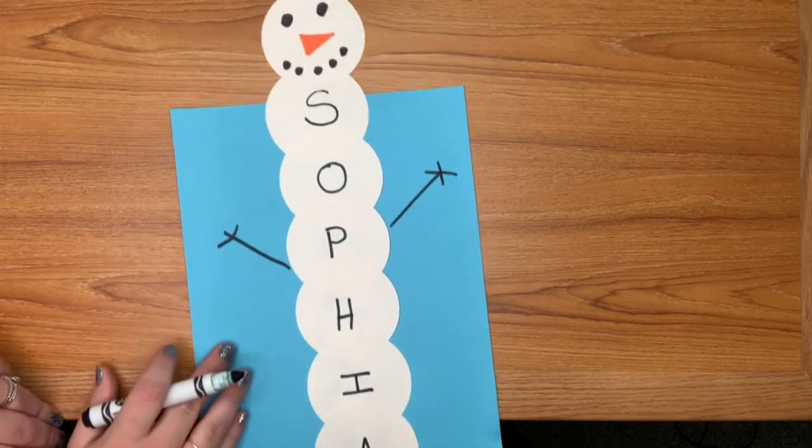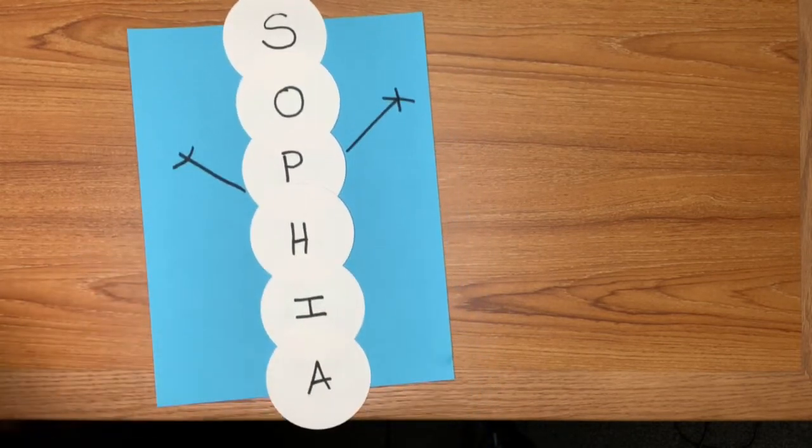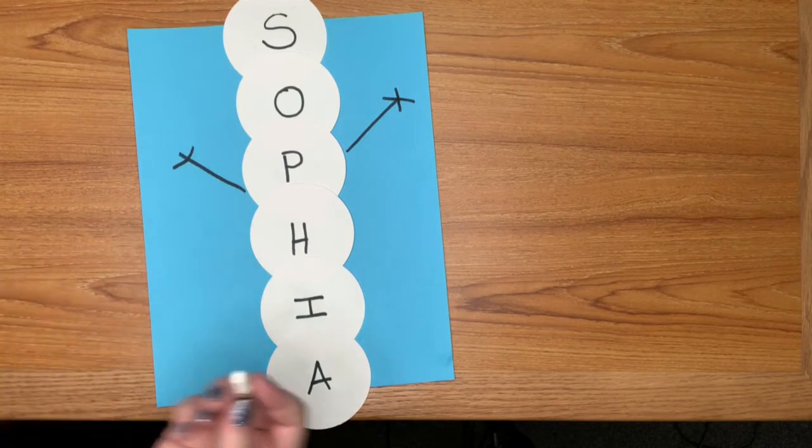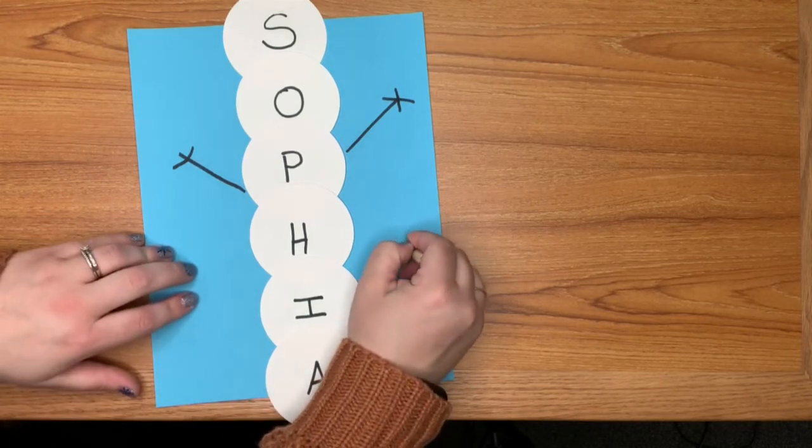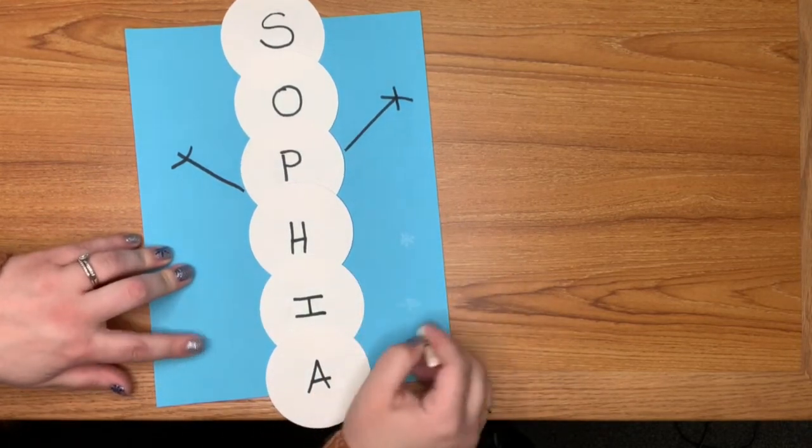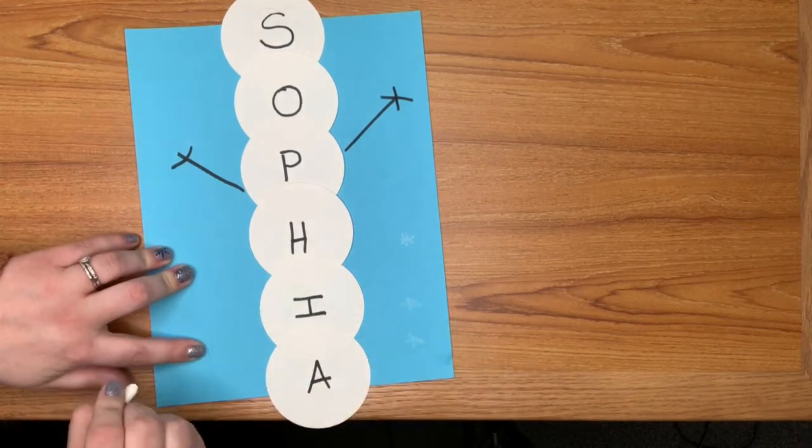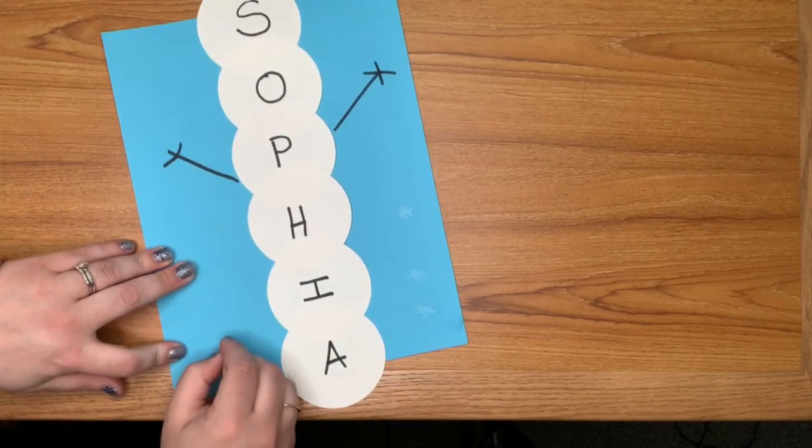So here's our snowman's arms and then I'm going to take a white crayon and I'm going to make some fun snowflakes on our paper with the white crayon.